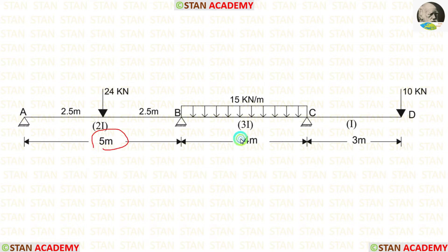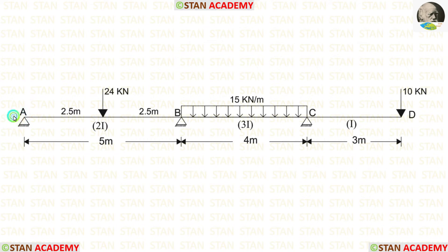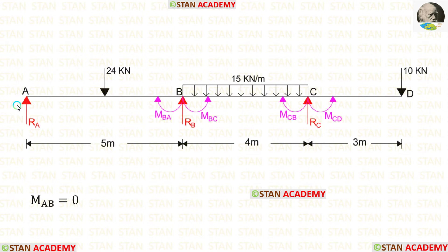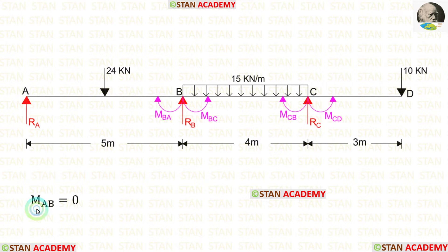The length of AB is 5 meters, the length of BC is 4 meters, and the overhanging span is 3 meters. At points A, B, and C, there are hinged supports. In this beam, we have to find 4 moments. At point A, there will be no moment because it is a simply supported end, so MAB will be 0.